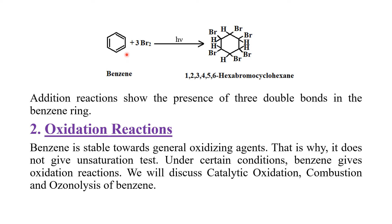इसी तरह से sunlight की presence में bromine add होने से 1,2,3,4,5,6-hexabromocyclohexane बनती है। Addition reaction से हमें यह पता लगता है कि benzene ring में three double bonds मौजूद होती हैं।